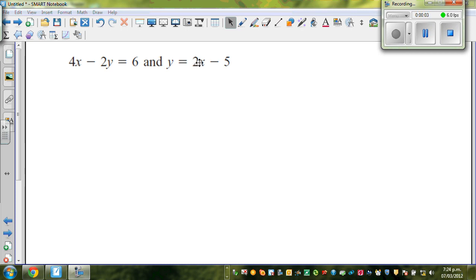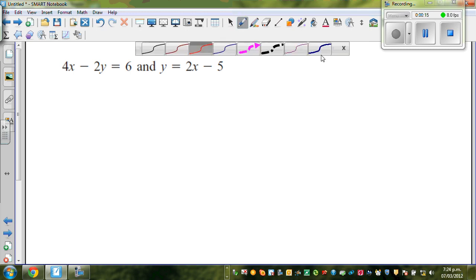Let us look at this simultaneous equation and try to solve this. As I told you in my previous video, there are different ways of solving a simultaneous equation. When I look at this equation, I'm looking at 4x minus 2y equals 6. Let me call this equation A.